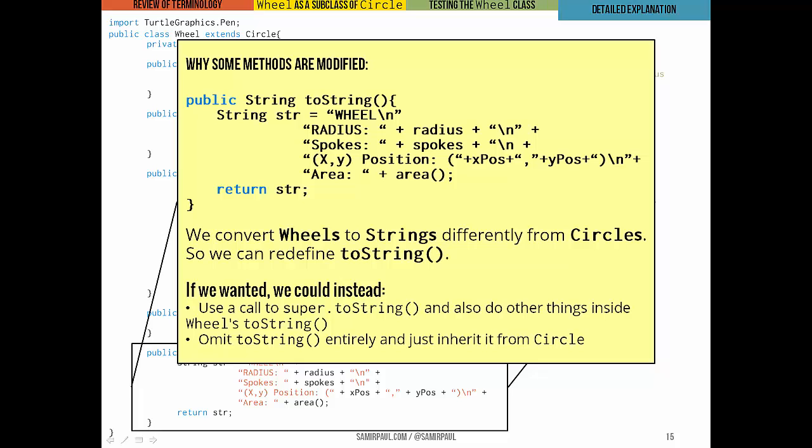Some methods can be modified too. So whenever a Wheel object has to respond differently to a method call than a Circle object would, we just redefine that method inside the Wheel class. Draw like we saw before and toString are both good examples of this. Whenever it's convenient, the redefined method, the new one in the current class can just use the super keyword to call the old version of the method from the super class and then add any additional behavior onto the side. But you don't have to. We did that in the draw method, but in the toString method, we don't do that at all. We just have a new string that we build and we return that string. You don't have to use super.